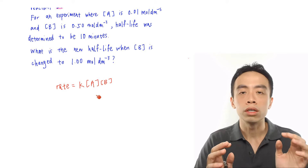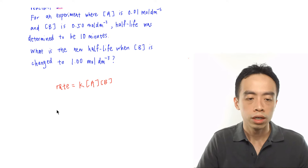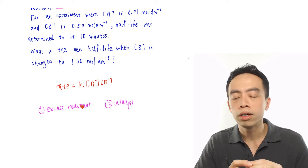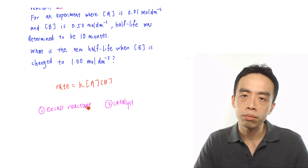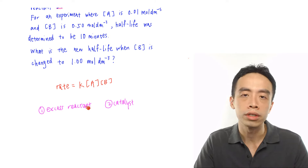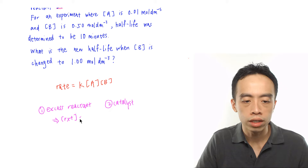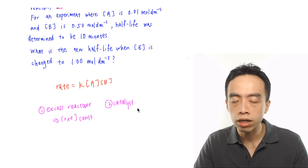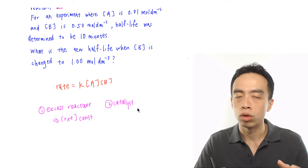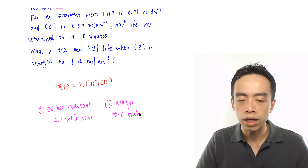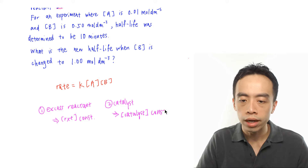For pseudo-first-order reactions, there are two criteria to look out for. The first is an excess reactant, or alternatively a catalyst. For criteria 1, when one of the reactants is in excess, as the reaction proceeds, the change in the amount of that reactant is negligible, so its concentration is treated as constant. For criteria 2, if a catalyst is involved, the catalyst is chemically unchanged at the end of the reaction, so the concentration of the catalyst also remains constant.